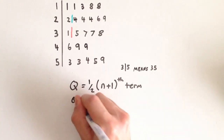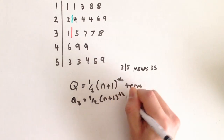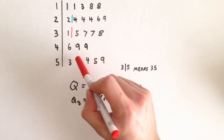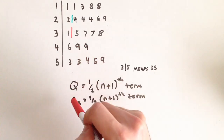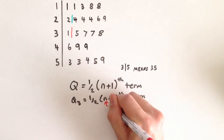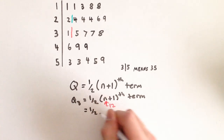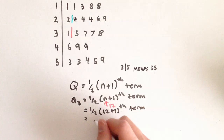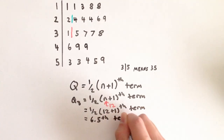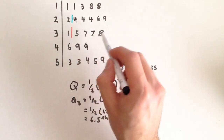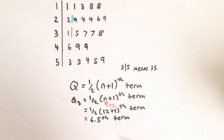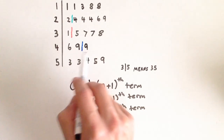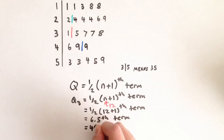Finally, Q3. Q3 equals one half of (n plus 1)th term. n is the number of data values after the median, which again is 12. Substituting: one half of (12 plus 1) — 13 times one half is 6.5. Note that n will always be the same for Q1 and Q3. Counting 6.5 terms after the median: 1, 2, 3, 4, 5, 6, 0.5 — we're halfway between the 6th and 7th values. Taking the average: (49 plus 49) divided by 2 is 49. So our Q3 equals 49.